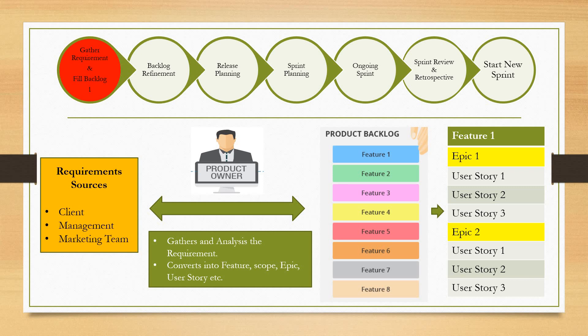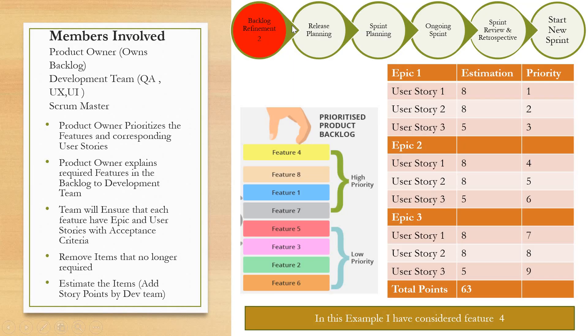The second phase is backlog refinement. Members involved in backlog refinement are the product owner, the development team — which includes QA, UX, as well as other members — and the scrum master. The product owner is the owner of the backlog.